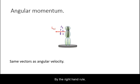By the right hand rule, the wheel spinning forward means that the angular velocity and hence angular momentum is pointed towards the left.